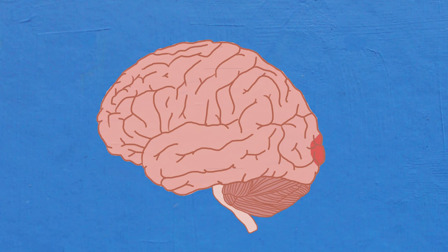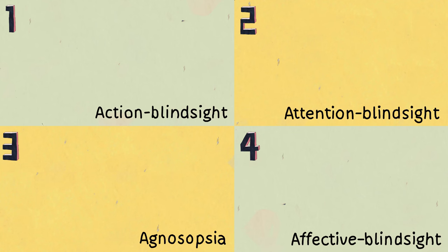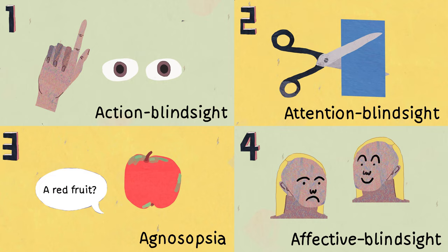Instead of the cortical pathway that passes through V1, visual information seems to follow a subcortical pathway. The diversity of visual abilities in blindsight patients suggests that each ability uses a unique pathway that doesn't include V1.